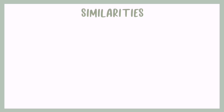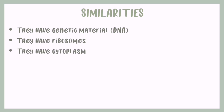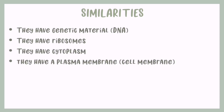Now let's talk about the similarities. Eukaryotes and prokaryotes both have genetic material, which is another way of saying DNA. They both have ribosomes, cytoplasm, and a plasma membrane, which is another way of saying cell membrane.